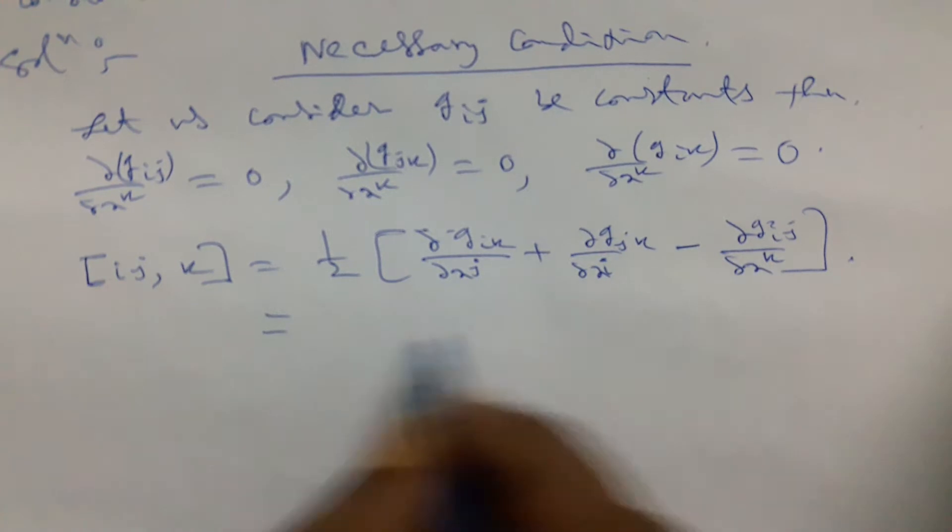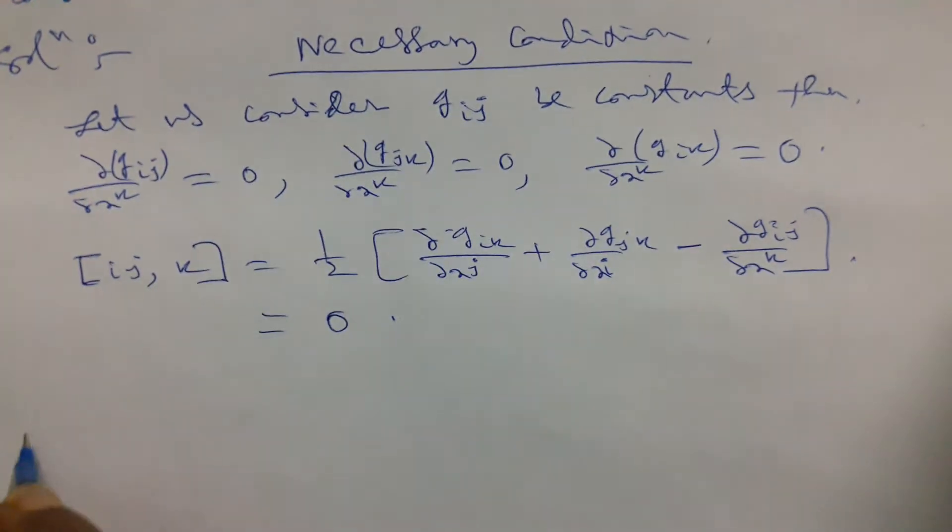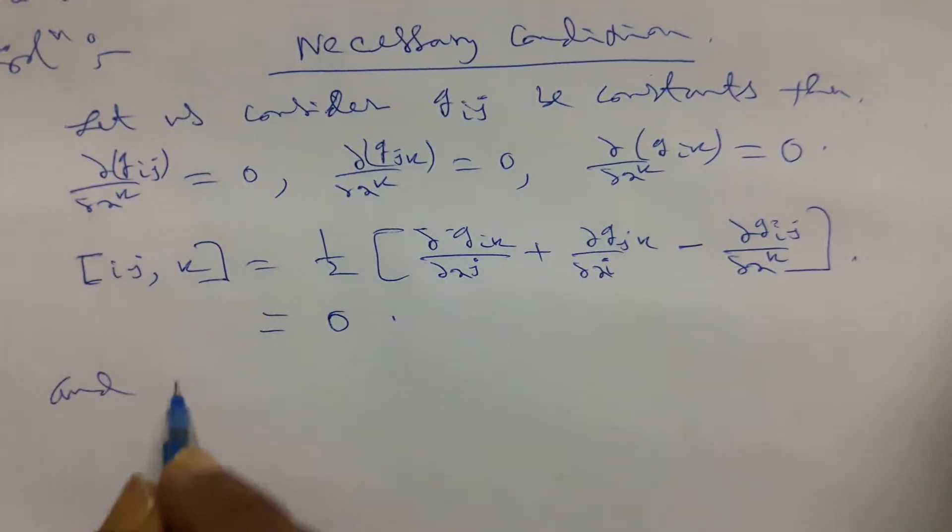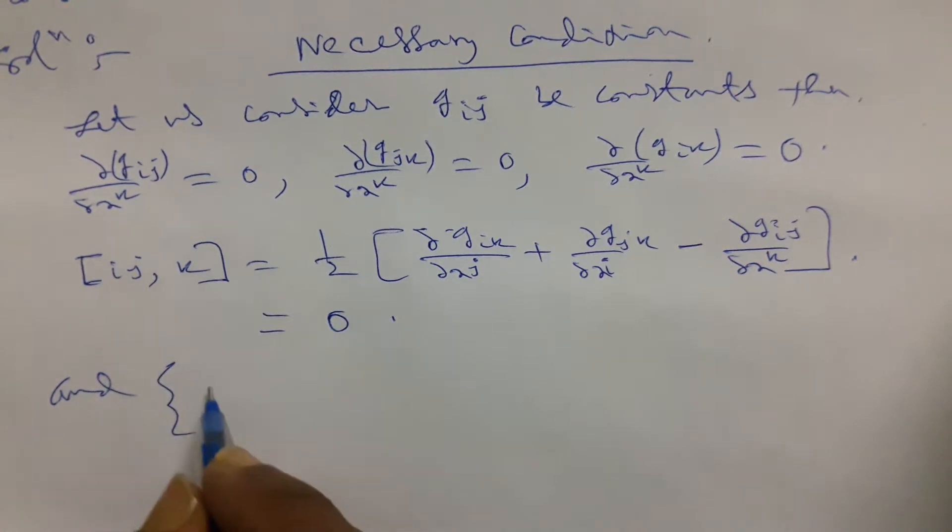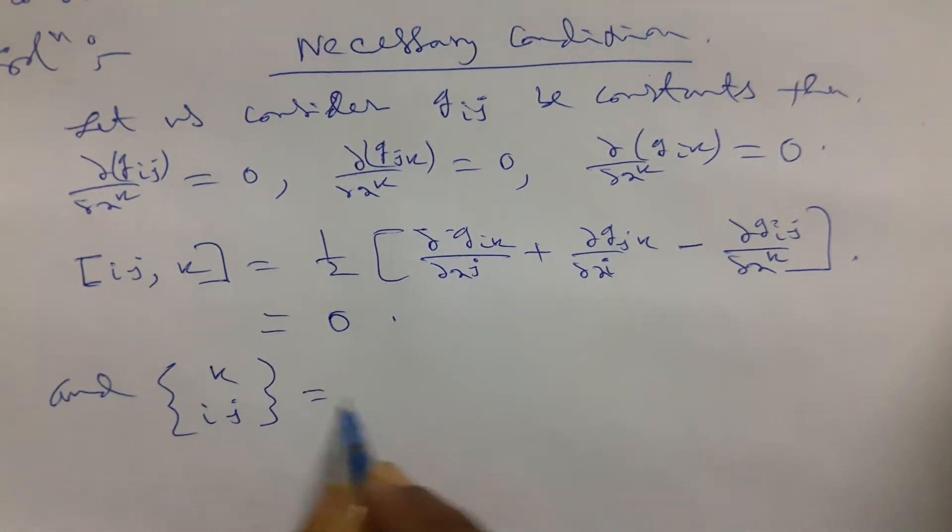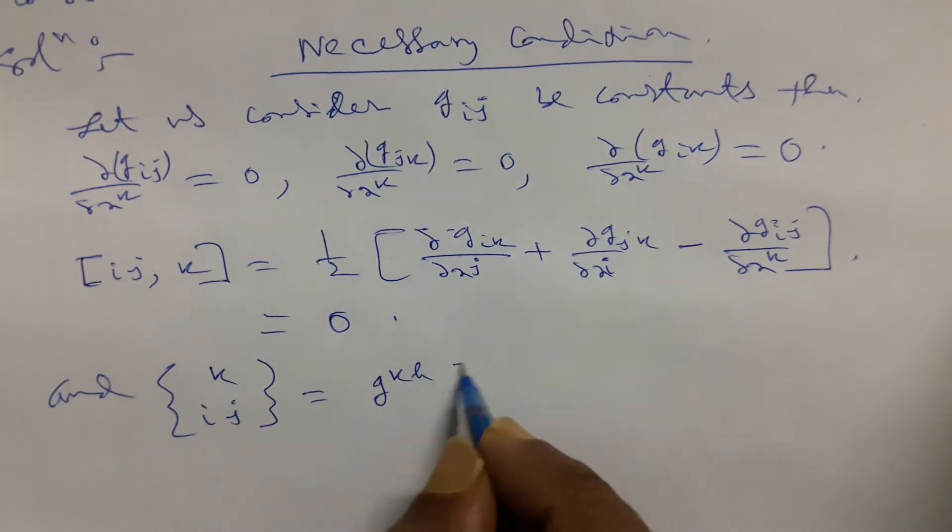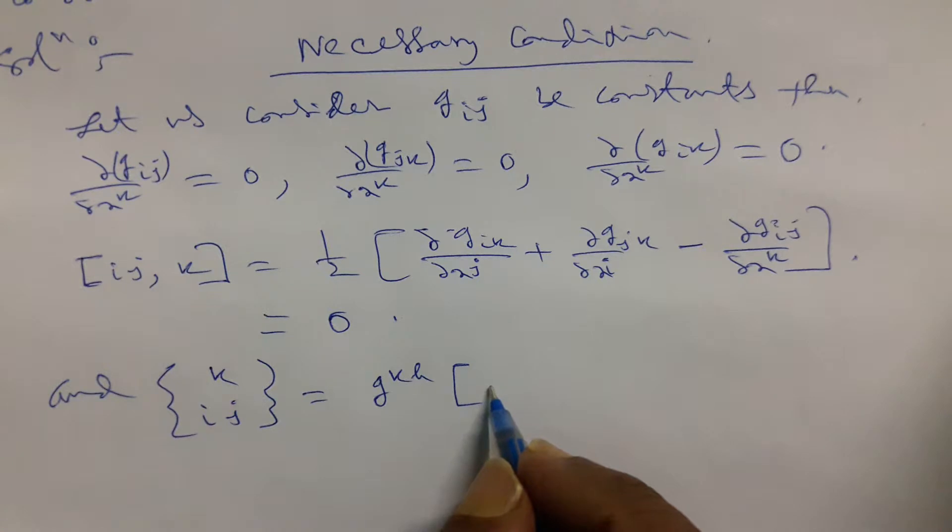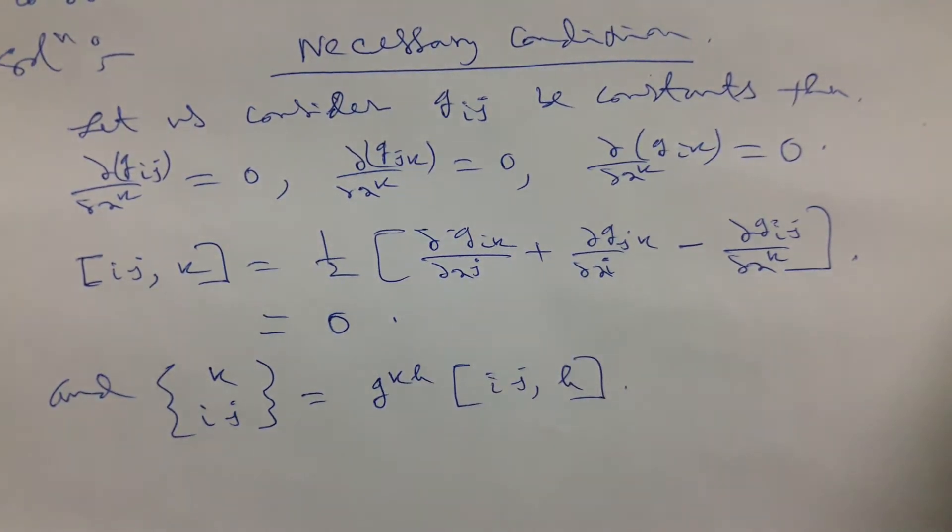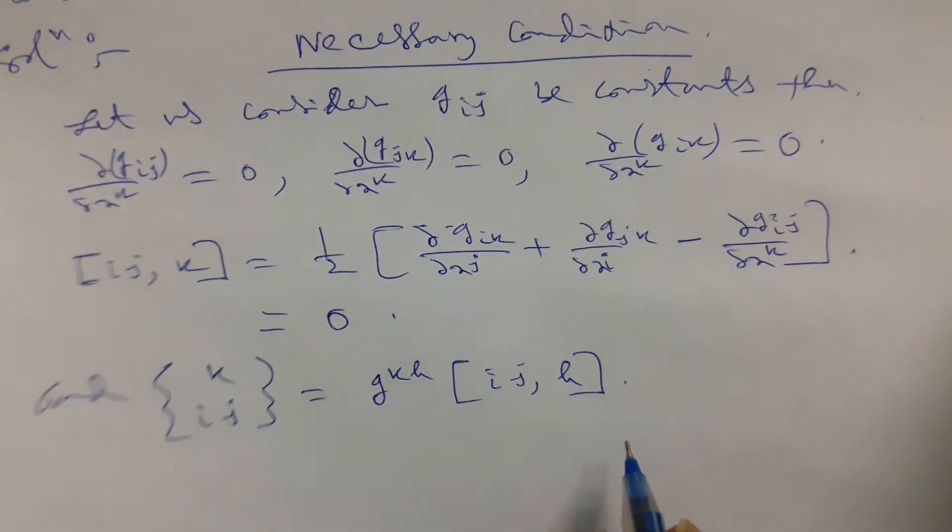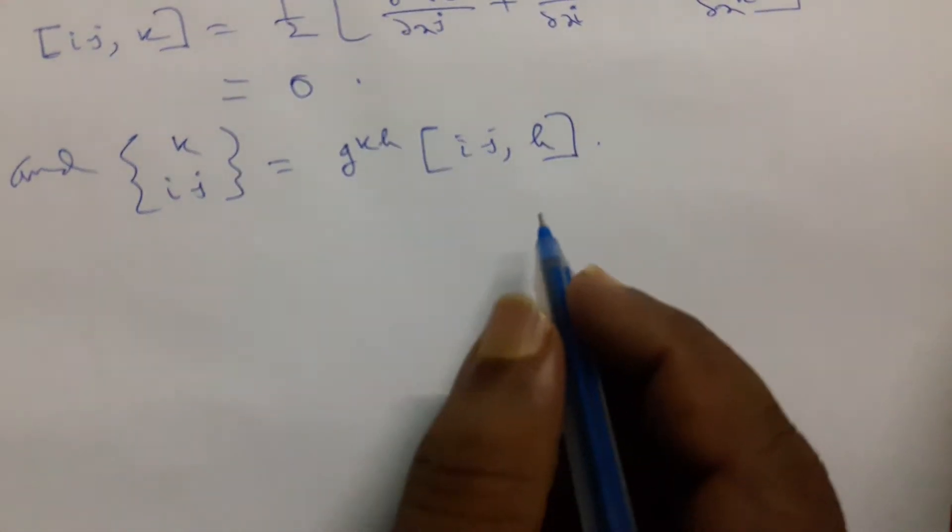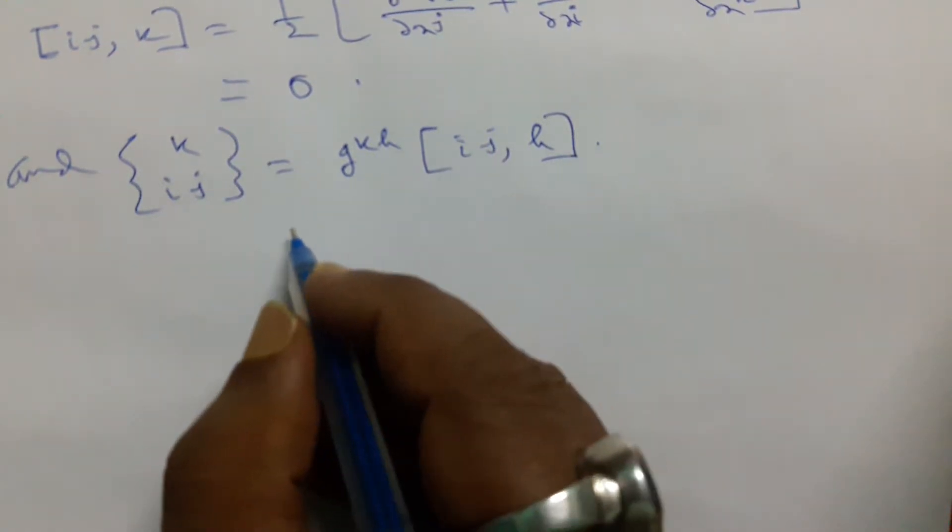And using Christoffel symbol of second kind, the bracket {k,i,j} that will be g^kh times [i,j,h]. If we put it in this manner, then it's similar.